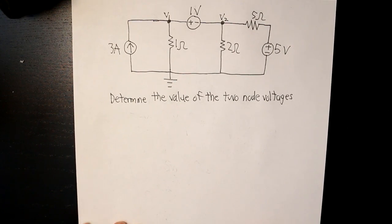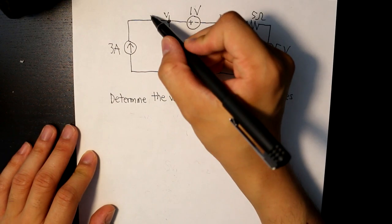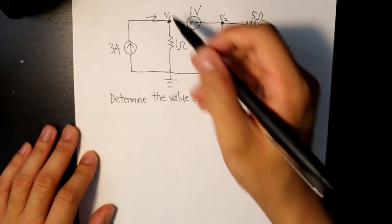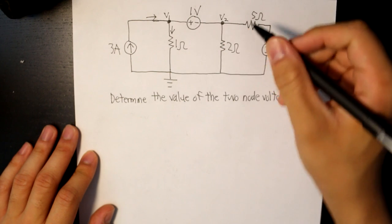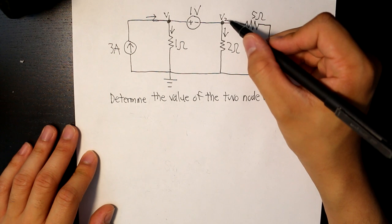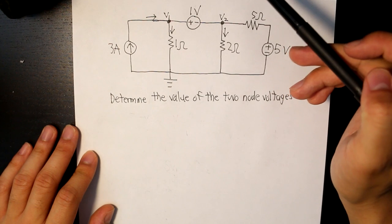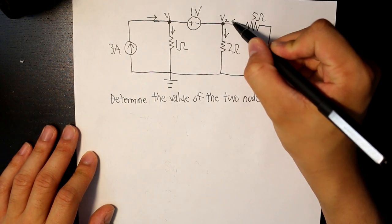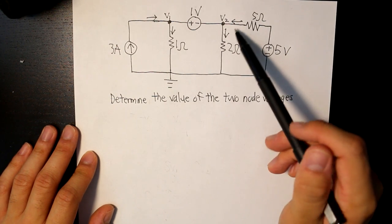Now let's identify all the currents that are entering and leaving each and every single node. So this branch current is entering V1. Current is entering out V1 right here in this branch. Current is entering out from V2 in this branch. And current is exiting V2 and current is exiting V1. And this current right here is entering into V2. So now we're given all of our currents.